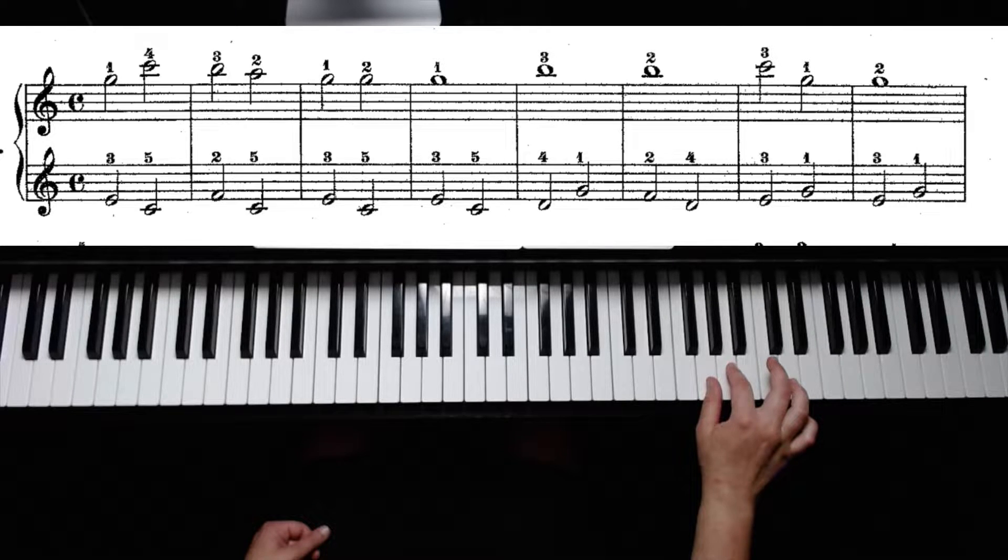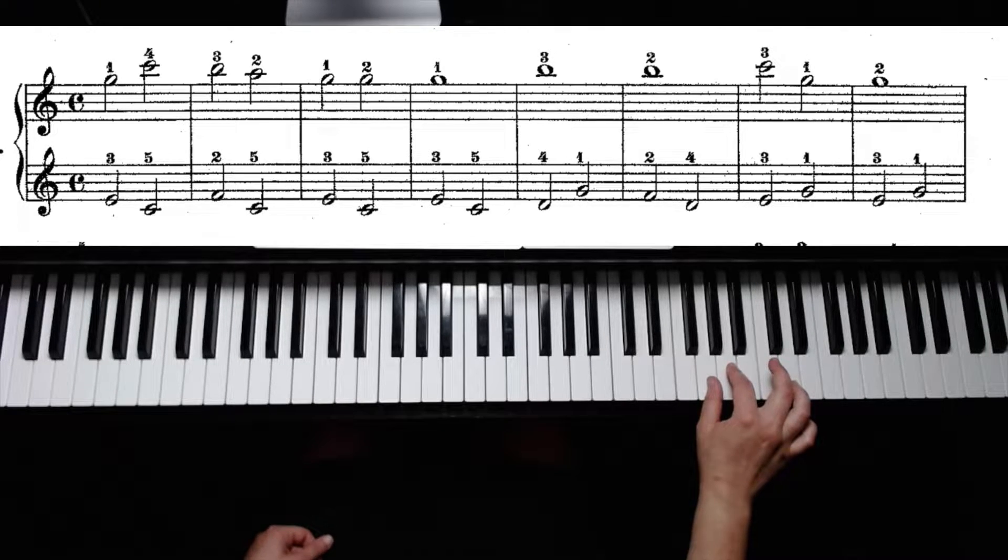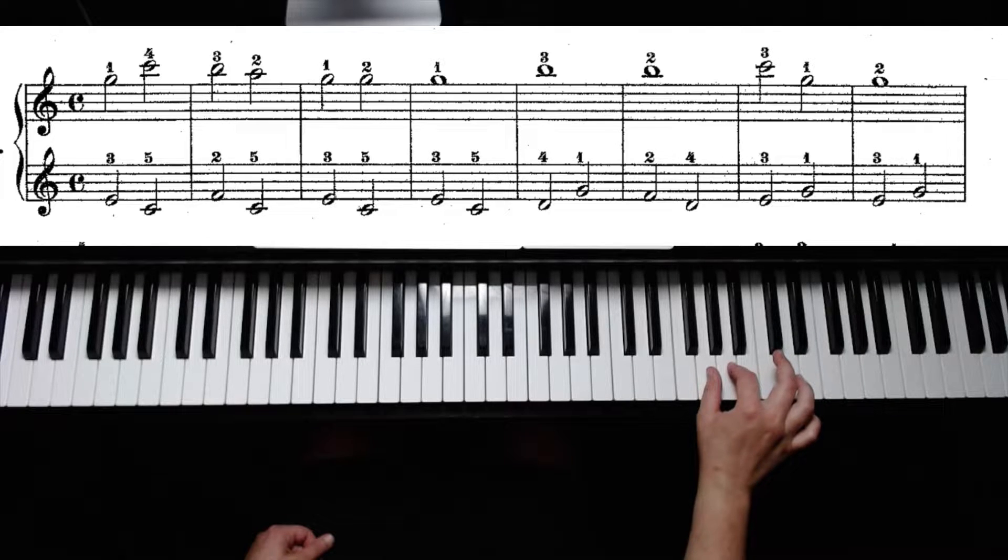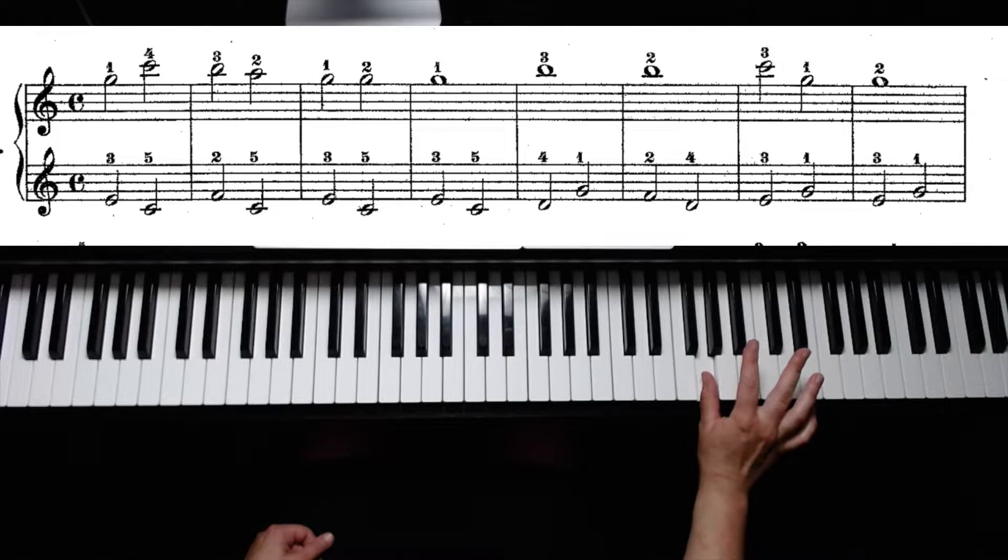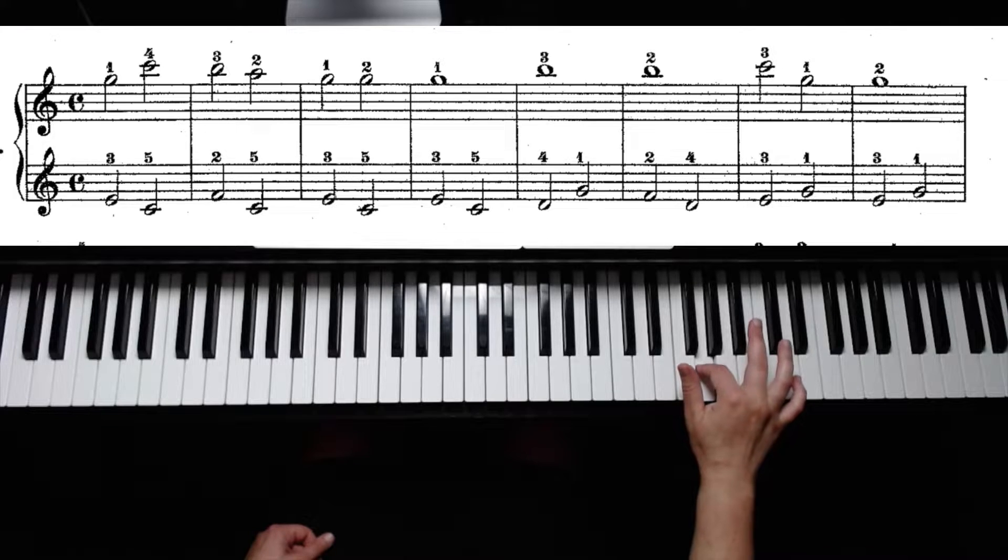Now we're going to have three Gs, but we're going to change our fingers on these Gs. So the first G is played with your thumb, which is already on G. We're going to switch to our second finger, and back to our thumb.